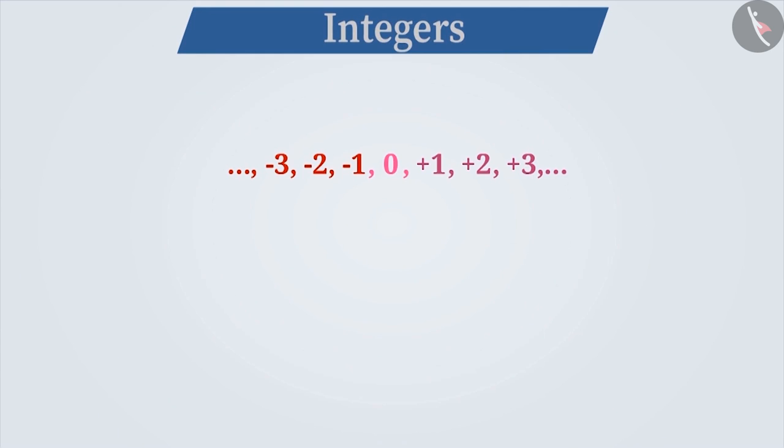Integers expressed by plus signs such as plus 1, plus 2, plus 3, etc. are called positive integers. Generally, we express them without a sign. Therefore, remember that any number without a sign other than 0 is always a positive number.